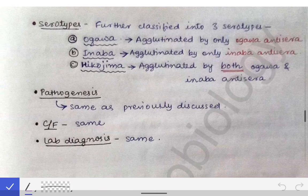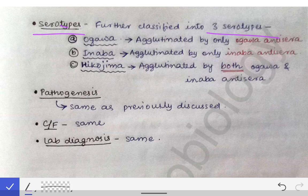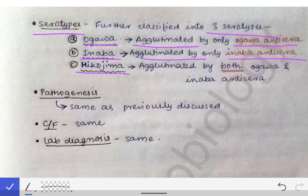Both the classical biotype and the El Tor biotype are further classified into three serotypes: Ogawa, Inaba, and Hikojima. For differentiation, the agglutination test is used. If agglutinated with Ogawa antiserum, it is the Ogawa serotype; if agglutinated with Inaba antiserum, it is the Inaba serotype; and if agglutinated by both Ogawa and Inaba antiserum, it is called Hikojima.